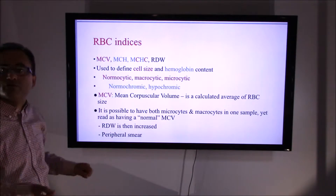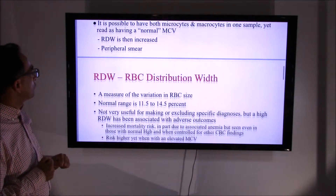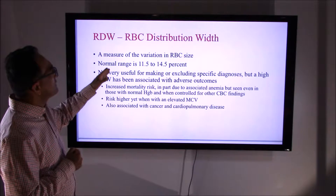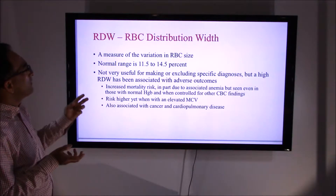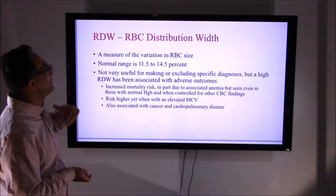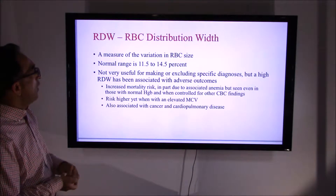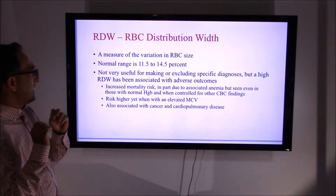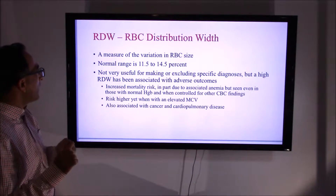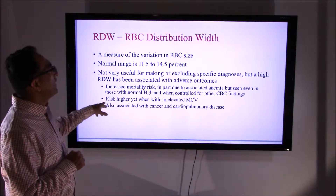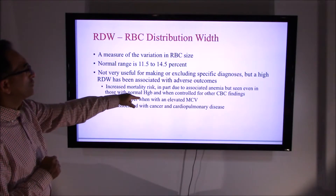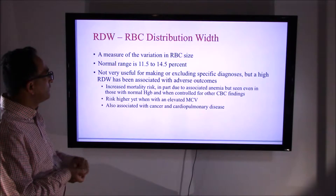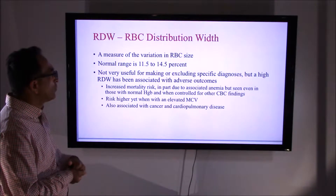RDW stands for red blood cell distribution width. It is a measure of variation in red blood cell size. Know the normal range. While RDW per se may not help in diagnosis directly, data suggest it is associated with anemia that carries extra mortality. An elevated MCV also correlates with higher risk, particularly with cancer and cardiopulmonary disease.